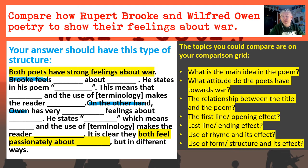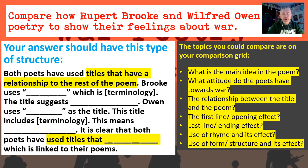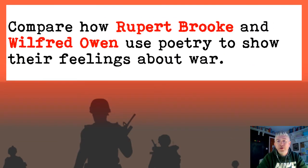Here's another example, this one for the title: 'Both poets have used titles that have a relationship with the rest of the poem.' That's looking at one particular focus at a time. 'Brooke uses something as his title — the title suggests something. Owen uses something for his title — this title includes some terminology — this means... It's clear that both poets have used titles that something.' That's the kind of style to go for if you're not sure how to write your answer, though if you've got your own style, go with that too.